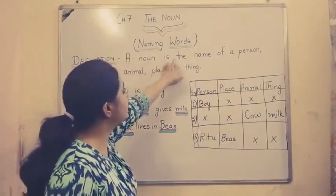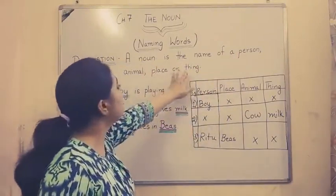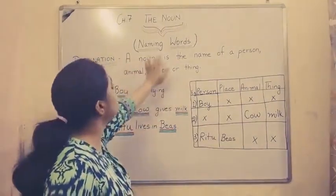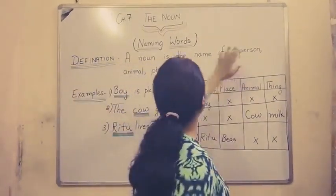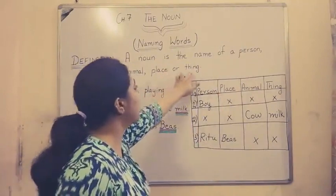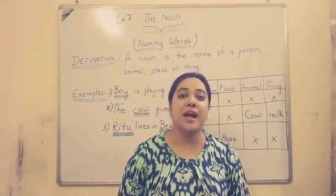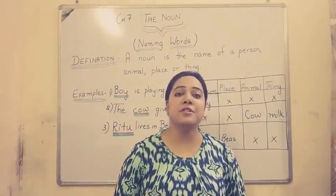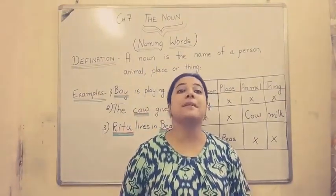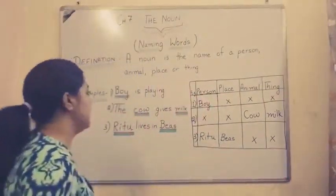What is the definition? A noun is the name of a person, animal, place or a thing. I repeat once again: a noun is the name of a person, animal, place or a thing. In order to make our life easy, we have given different names to different things, places, persons and animals. Let's see through the examples.